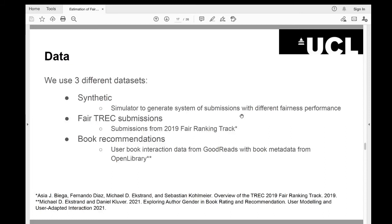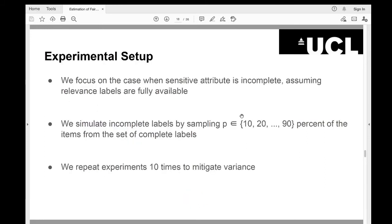First of all, we used three different datasets. One of them is we generated a simulator that generates system of submissions with different fairness performances. And then we used submission of 2019 fair ranking track systems. Finally, we used book recommendations data, which includes book instruction from Goodreads with metadata information from Open Library. And this metadata information contains the gender information of authors for books. Here's our experimental setup. We focus on the case when sensitive attribute is incomplete. And we assume that the relevance labels are fully available and fully known for all items. And then we simulate incomplete labels by sampling from 10% to 90% of the items from the set of complete labels. And we repeat our experiments 10 times to mitigate the variance of estimations.